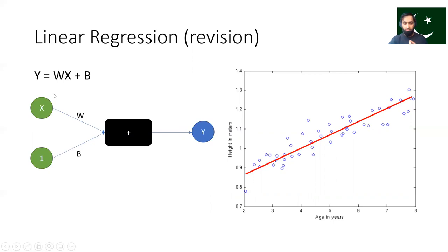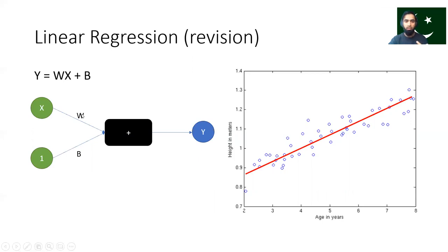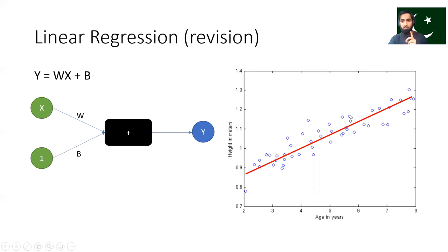One thing to note is that in this previous problem we had only one input, which was age in years. Now you can have more than one input — for example, age, weight, and nationality — giving three inputs. Each input x1, x2, x3 will have a corresponding weight w1, w2, w3. In our digit recognition case, we have 28 by 28 pixels, which means 784 inputs for each image. Linear regression fits one straight line through these inputs.